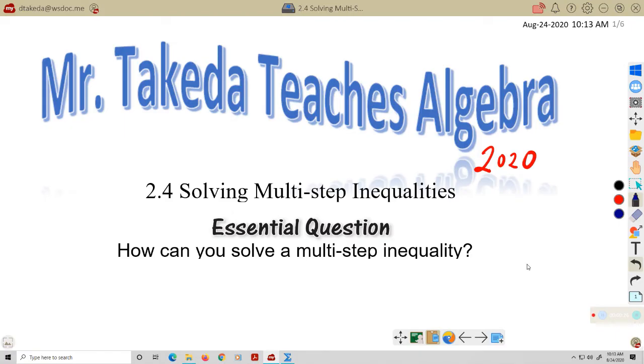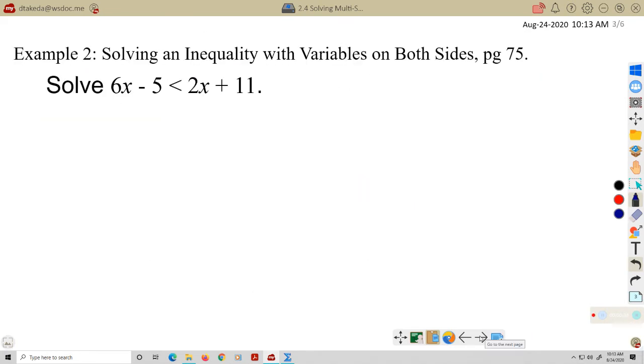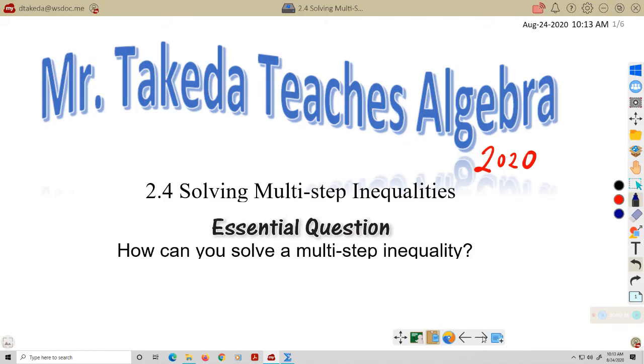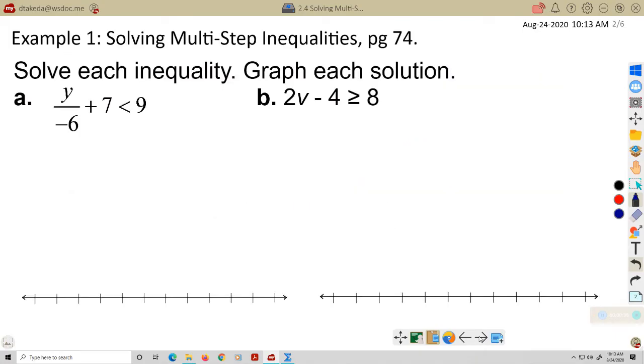This is Lesson 2.4, solving multi-step inequalities. The essential question is, how can you solve a multi-step inequality? The answer is quite simple. It's very similar to solving a multi-step equation. All of our properties for inequalities and equations are the same, except remember, when we divide by or multiply by a negative number, we have to reverse the inequality symbol. That's it. Otherwise, it's the same. Let's look at some examples right now.